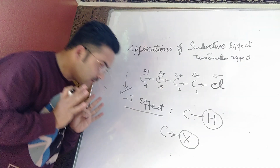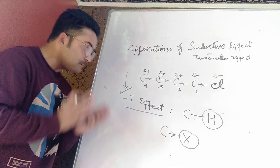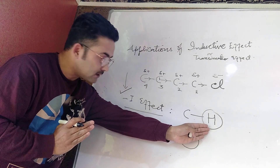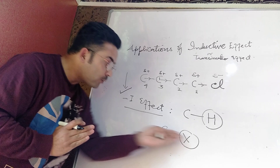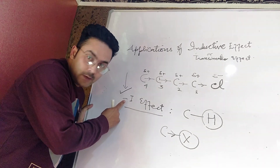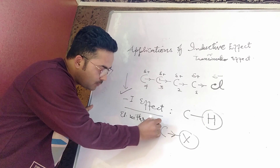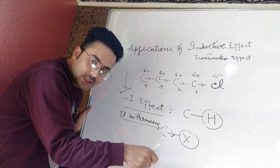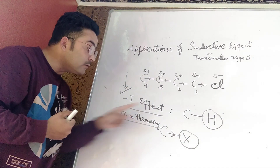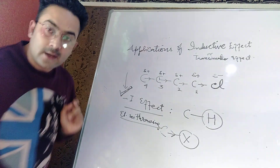Negative inductive effect simply means: if any atom or group has a higher electron-withdrawing capacity than hydrogen, which is the reference standard, then that atom withdraws electrons from the carbon. This atom or group is said to show negative inductive effect, also called electron-withdrawing effect. Whenever any atom or group attracts electrons towards itself — having a greater tendency to attract electrons — we say that group is an electron-withdrawing group showing negative inductive effect.